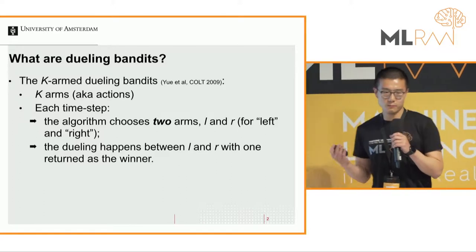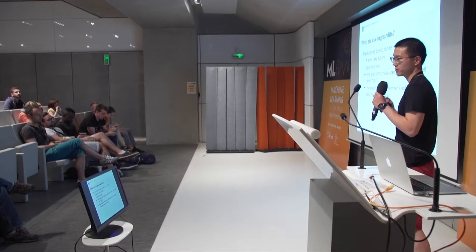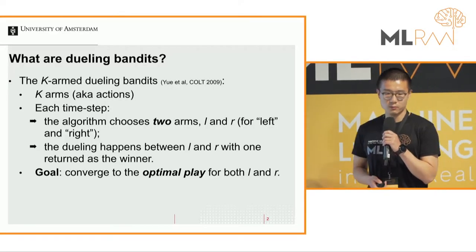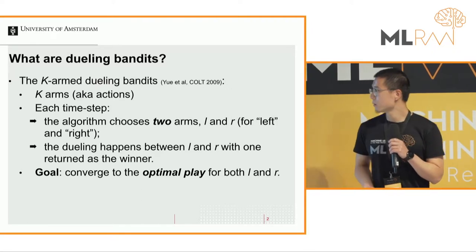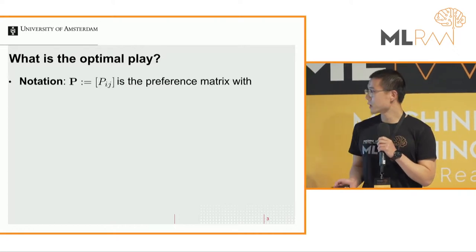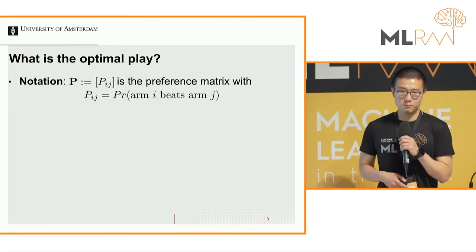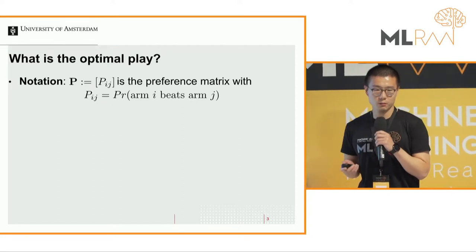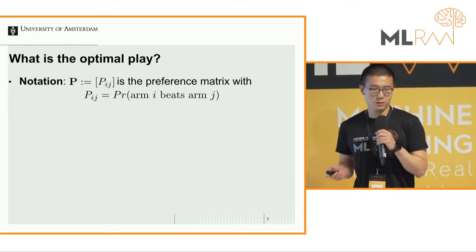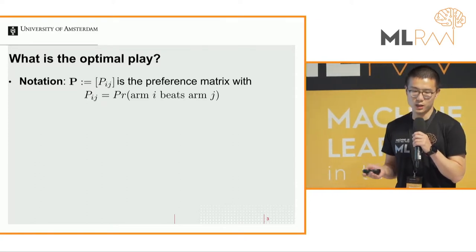The feedback you get is which of these two arms is better than the other one. The goal of this game is to reach the optimal play. We have a preference matrix P, whose element Pij is the probability that arm i beats arm j. So if Pij is larger than 0.5, arm i is better than arm j, because over half the time arm i beats arm j.